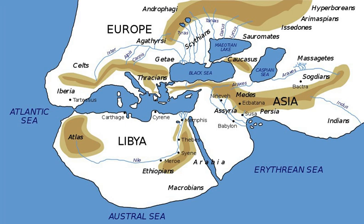Ancient Ethiopia first appears as a geographical term in classical documents in reference to the Upper Nile region, as well as certain areas south of the Sahara Desert and south of the Atlantic Ocean. Its earliest mention is in the works of Homer, twice in the Iliad and three times in the Odyssey.